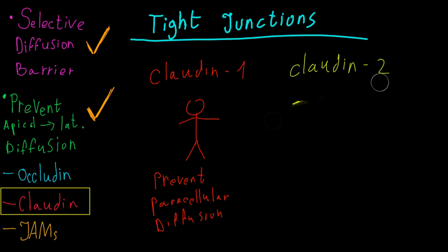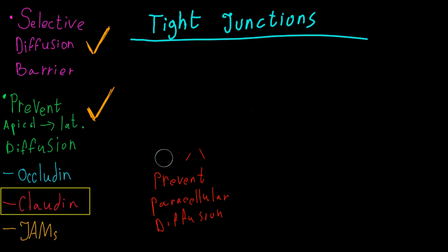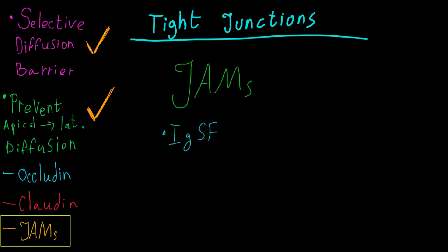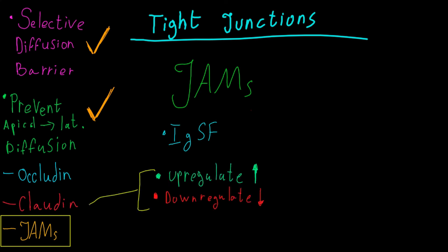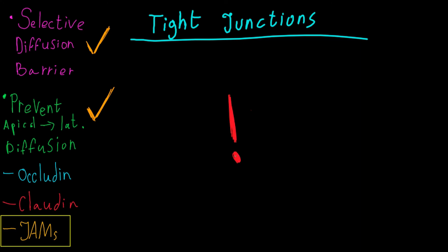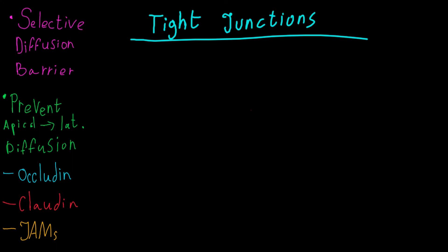Claudins are a very important protein family in tight junctions, and most of the function of tight junctions can be attributed to them. The amount and types of claudin vary from one type of tissue to another. The last type of protein is junctional adhesion molecules, or JAMs. JAMs are members of the immunoglobulin superfamily and do not form tight junctions directly. Instead, they associate with various types of claudins in order to up-regulate or down-regulate them, depending on the type of claudin and tissue. JAMs have many more functions in various physiological contexts, but here they are discussed only in the context of tight junctions.